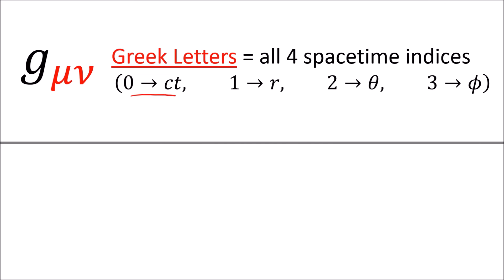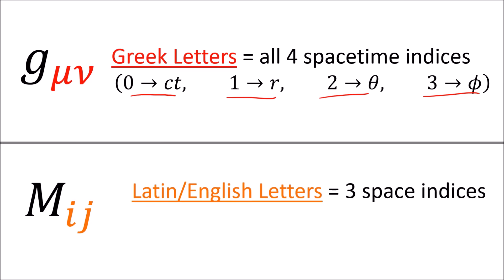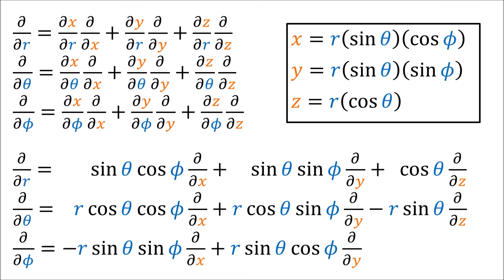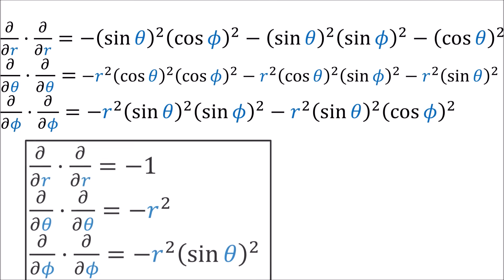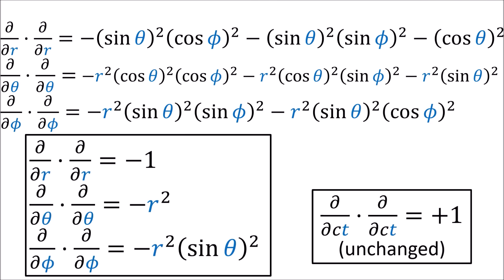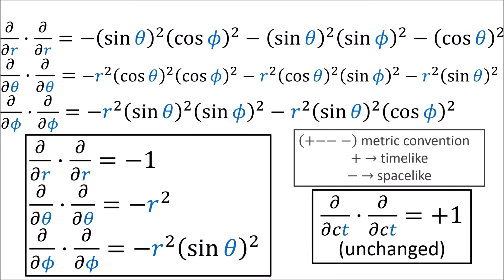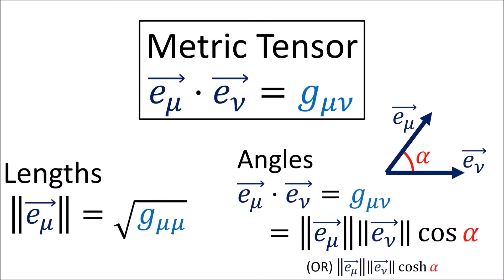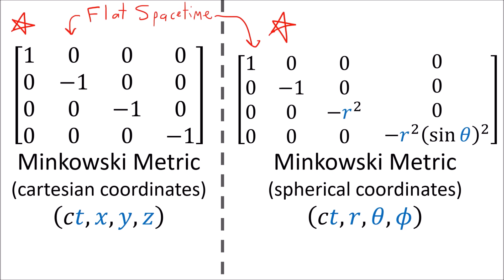In summations, when we use a Greek summation index, this refers to all four spacetime indices, but if we use a Latin letter, this just refers to the spatial indices without time. If we change from the Cartesian coordinate basis to the spherical coordinate basis using the multivariable chain rule and calculate the dot products of the basis vectors, we get the metric tensor components in spherical coordinates. The spatial dot products have negative signs because in the mostly minus convention, spacelike vectors have negative squared lengths. The metric tensor components are just the dot products of the basis vectors, so the metric tensor helps us measure lengths and angles in spacetime.